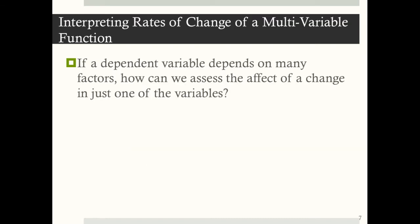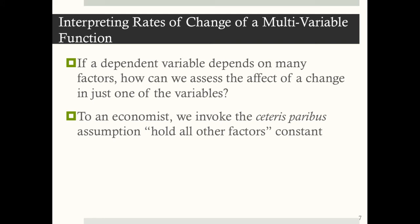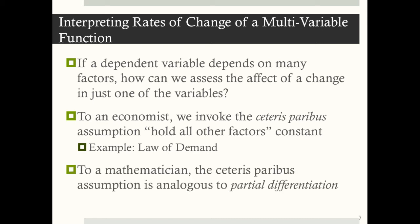So if a dependent variable z depends on many factors — x1, x2, y, and so on — how can we assess the effect of a change in just one of the variables? Well, economists invoke the ceteris paribus assumption, which means hold all other factors constant. For example, when we look at a demand curve, as the price increases quantity demanded falls ceteris paribus, holding things like income and the price of substitute goods constant. And to a mathematician, this ceteris paribus assumption is analogous to what's called partial differentiation.